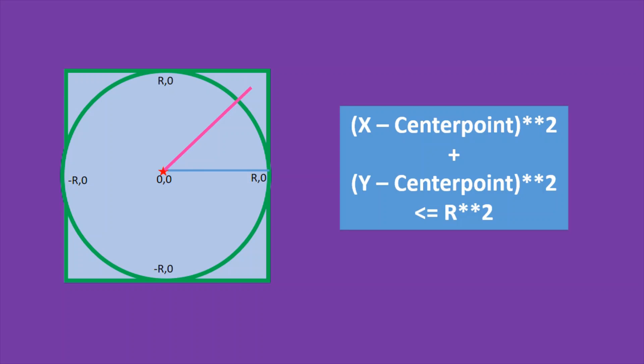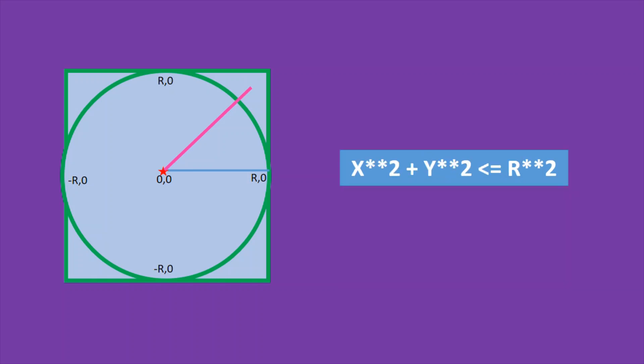Since our center point is a zero coordinate, we can optimize to x squared plus y squared less than or equal to r squared, which satisfies that the point with coordinate x and y is less than the radius r of the circle.